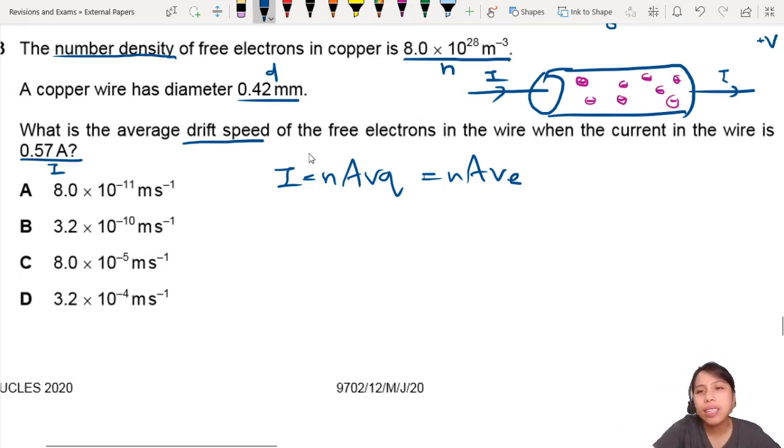And it really depends on the diameter, or the cross-section area, and the number density of the electrons. So number density means in this sample of copper, one meter cube of copper, how many free electrons will there be? It really depends on the material copper. But anyway, let's get to the calculation.